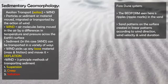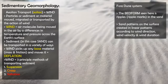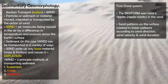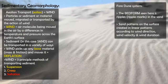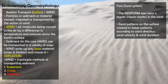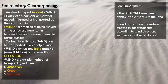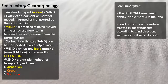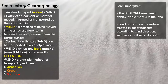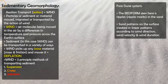Saltation is bouncing — the sand is lifted up and bouncing along. The last method is suspension, where the wind carries the sediment above the surface and it flows over the ground in the air, based on wind velocity and wind direction.